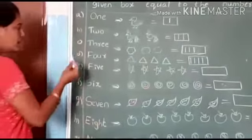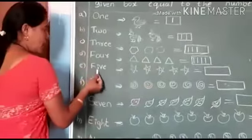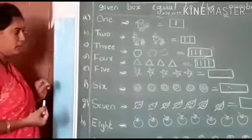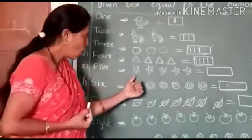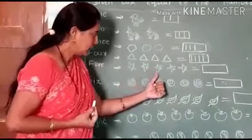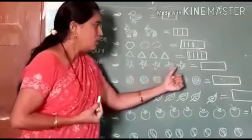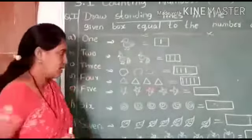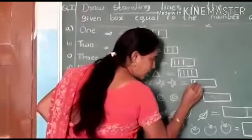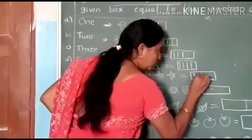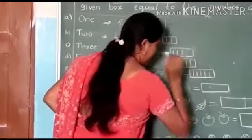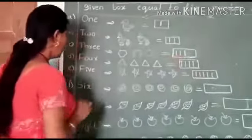Then E — F-I-V-E, 5. Count below: one, two, three, four, five. Five objects are there. We should draw here one, two, three, four, five standing lines.